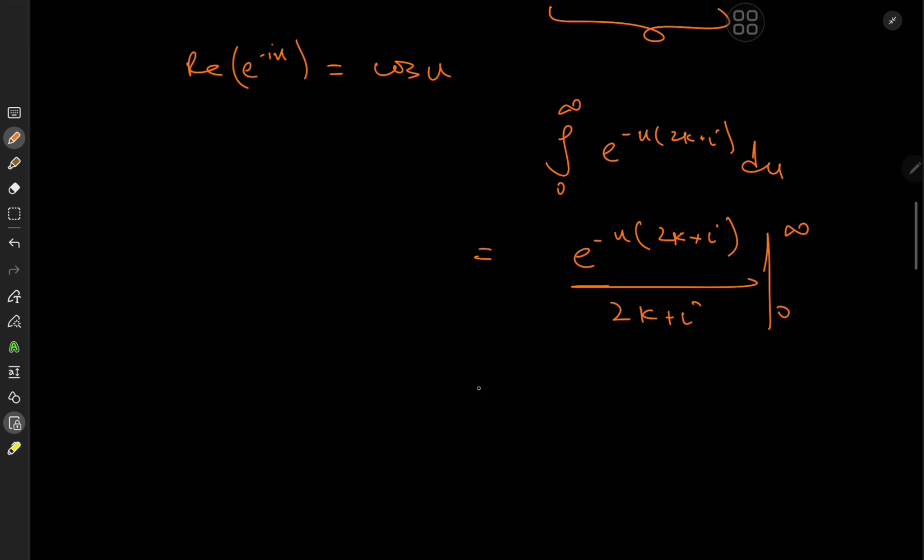Now, the exponential function could be broken down into e^(-2ku) times e^(-iu). And u is, of course, a real variable. So as u approaches infinity, this thing is going to crash down to 0. So we have 0 times a complex exponential, which is 0. So the first term is eliminated and we're left with minus the limit of this thing as u approaches 0, which is 1 over 2k plus i.